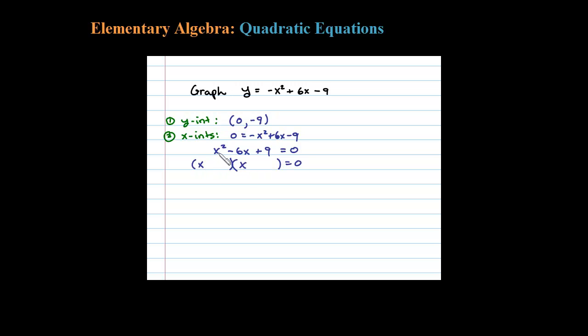So x times x is x squared. 9 factors into 3 times 3, adds up to negative 6 if they're both negative, and negative 3 times negative 3 is positive 9. So it's factored correctly. Then we set each factor equal to 0.